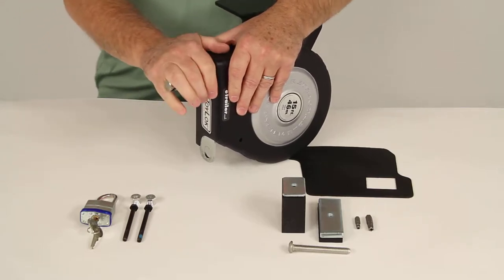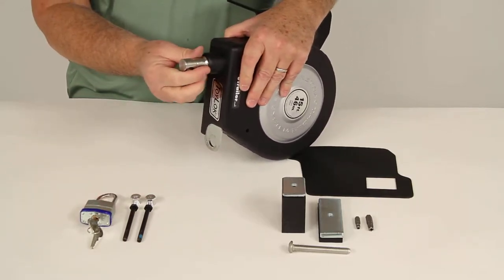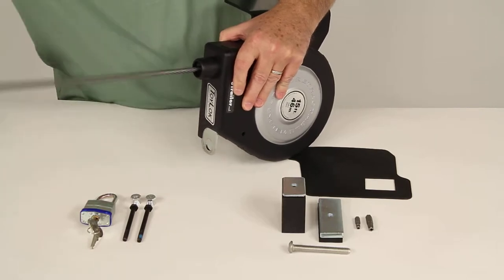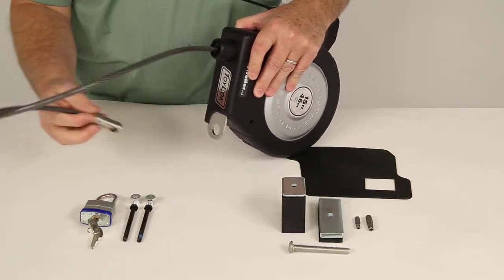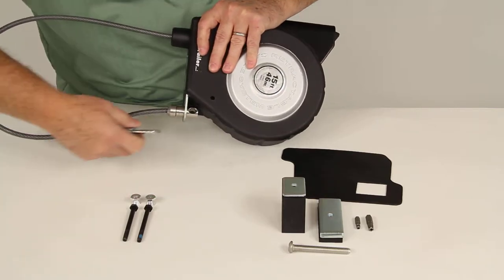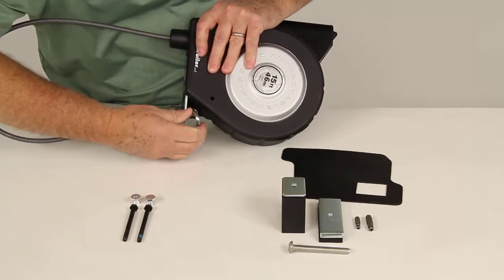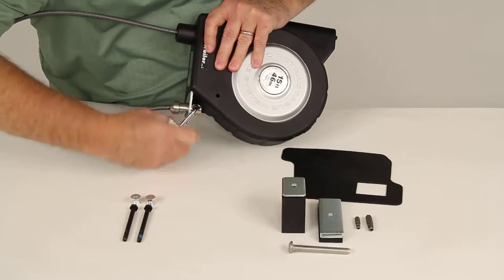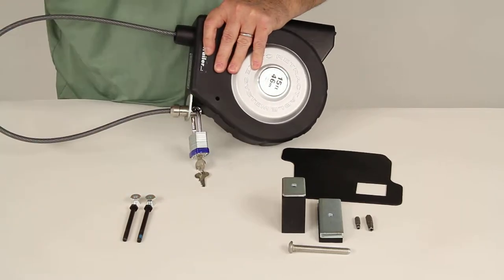Now there are two locking options using this included padlock. Basically what you can do is pull this out and then run it through your items you want to secure. Bring it back down through here and then just run your padlock right through there and then lock it into place and you have everything locked in.